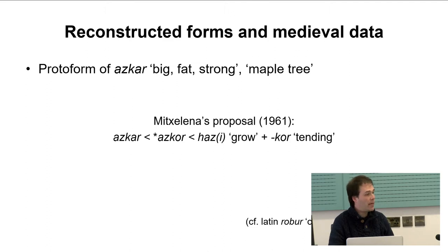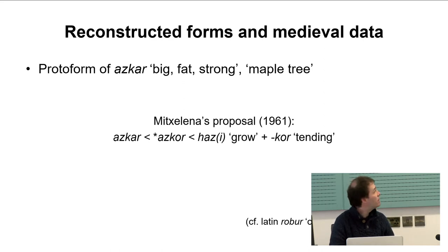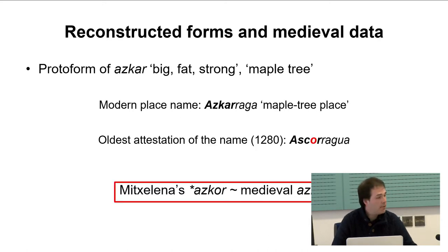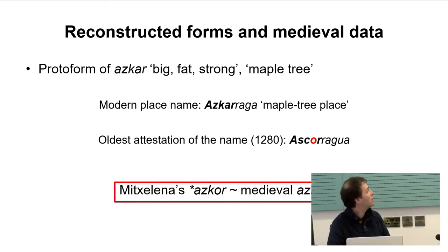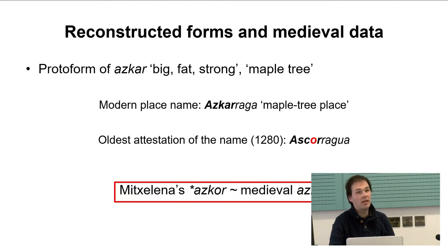Let's start with the discussion regarding 'askar'. Michelena reconstructed the word as a derived word from 'azi' meaning 'to grow' with a suffix '-kor', which has a general meaning denoting tendency. This word also has the meaning 'maple tree', and for the identity between the adjective and the tree name you can just recall Latin 'robur' and 'robustus'. What do we find in medieval documents? First of all, the modern place name 'askarraga', quite common in the Basque Country and also a last name, means 'maple tree place'. The oldest attestation I found for that name is 'ascora', which perfectly fits what Michelena reconstructed — he reconstructed 'ascor' and we have medieval 'ascor'.